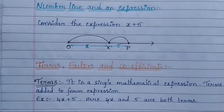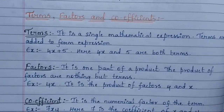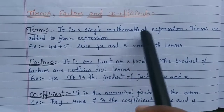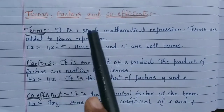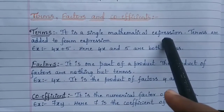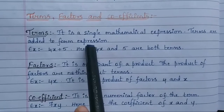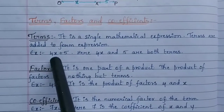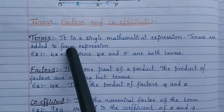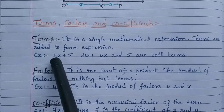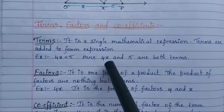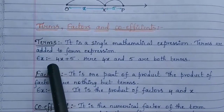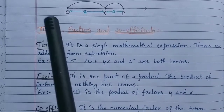Next we study terms, factors, and coefficients. A term is a single mathematical expression, with or without a sign. Terms are added to form an expression. For example, in 4x + 5, there are two terms: 4x and 5. Terms are added together to form our algebraic expression.